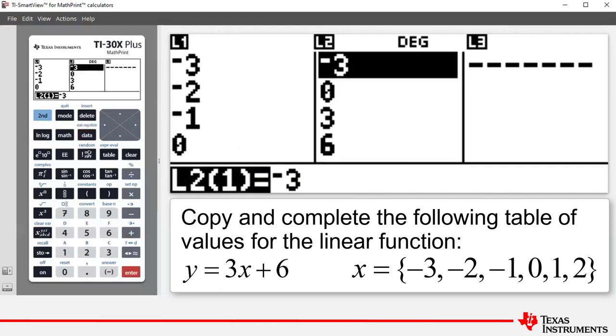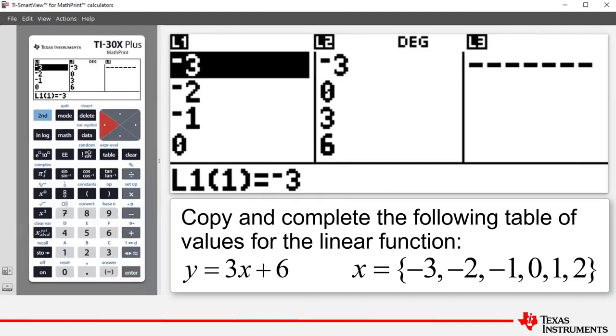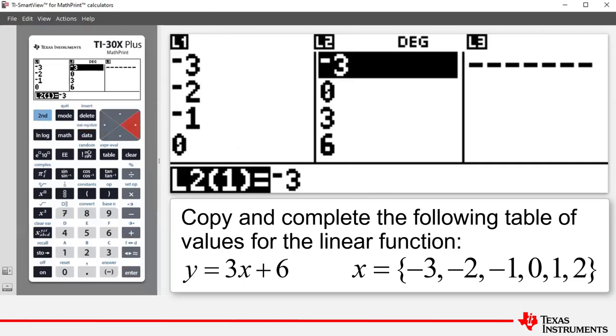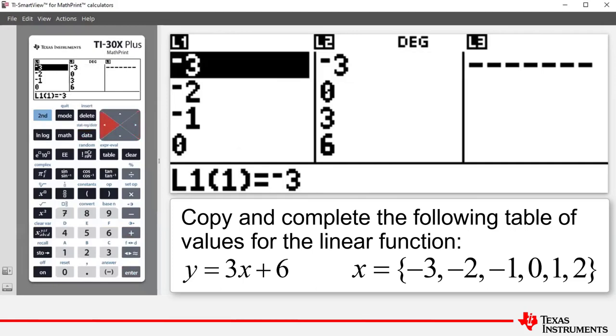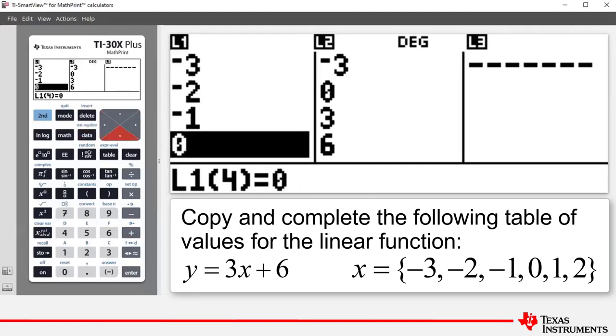And what we have now is for each corresponding x value, a corresponding y value. So for example, when x equals negative 3, y equals negative 3. Scrolling down, when x equals 0, y equals 6.